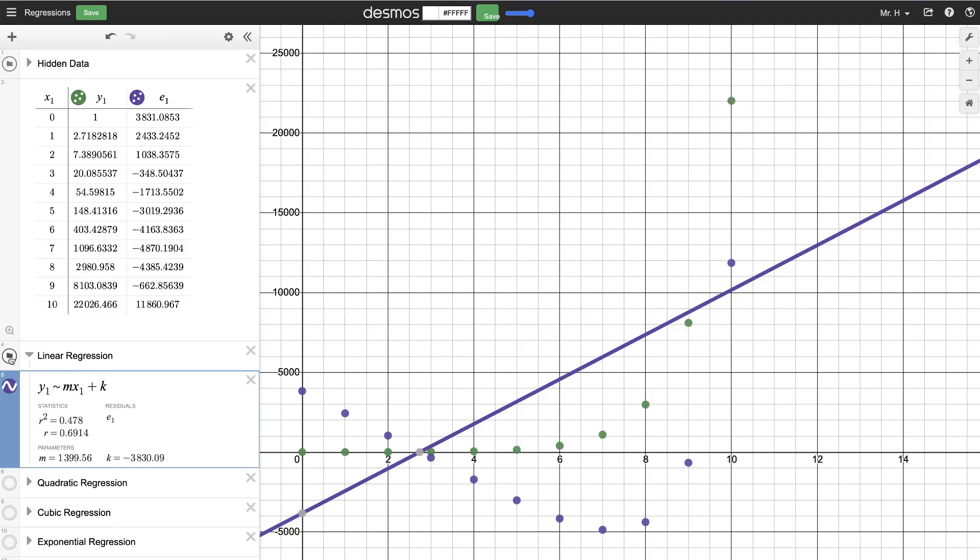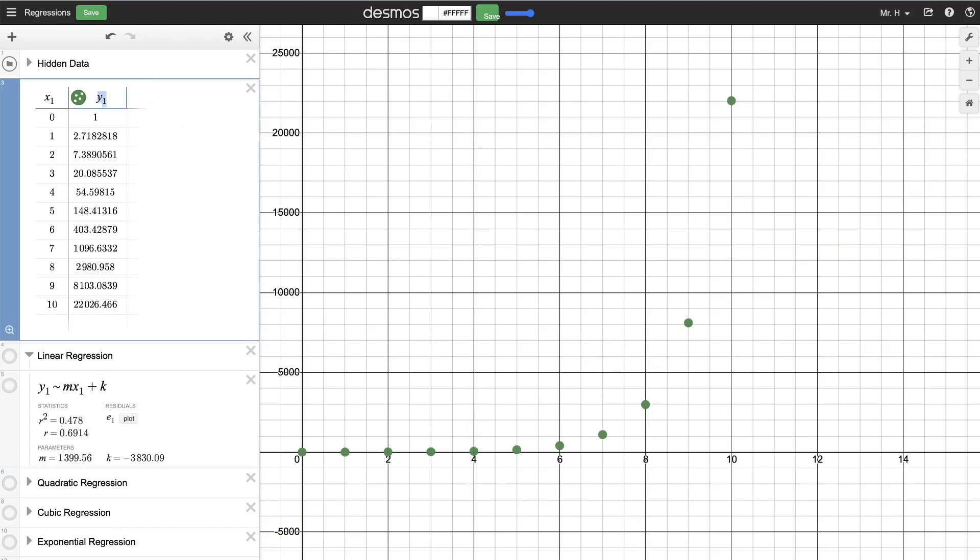So with that in mind, let's turn off this linear regression, and we'll get rid of that residual plot that we had, and we'll go down and try a different type of regression. So next up is going to be a quadratic regression. Let's see what that's going to look like.